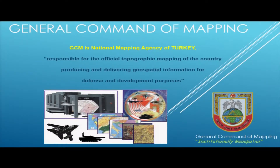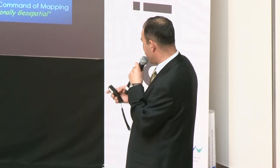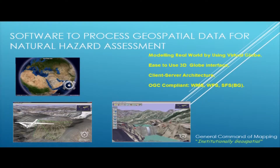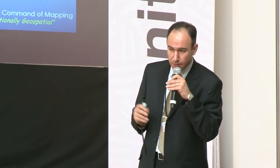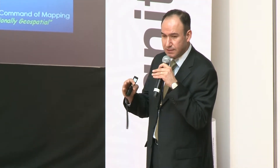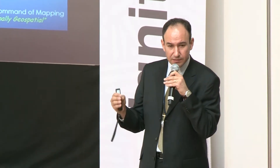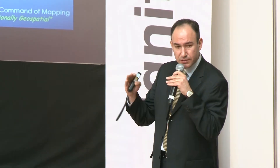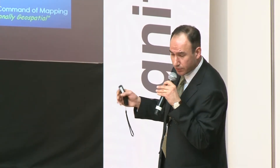In Turkey, the General Command of Mapping — the National Mapping Agency — is the main data supplier, responsible for topographic mapping and other geospatial information for both development and defense purposes. As a software solution, I want to discuss a special system developed by our own sources called the geospatial analysis system. It is a virtual globe system that models the real world using mathematical equations. It uses a client-server architecture where up-to-date data is placed on servers and clients can fetch the data in real time. It is OGC compliant and well-suited for 3D applications, with a very user-friendly interface.